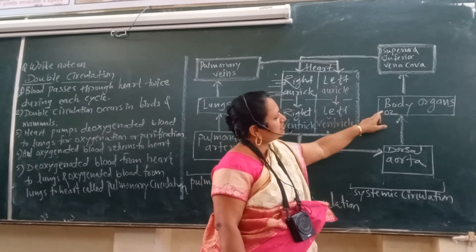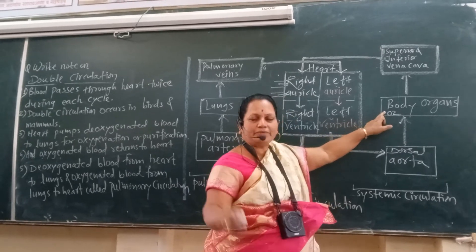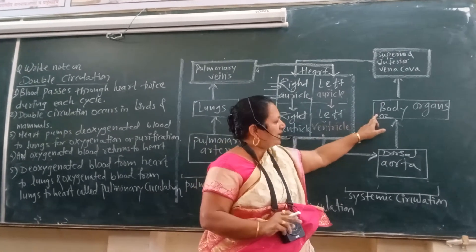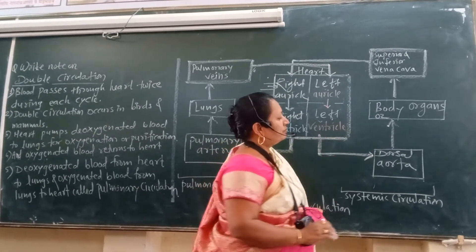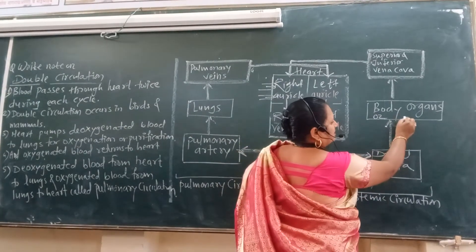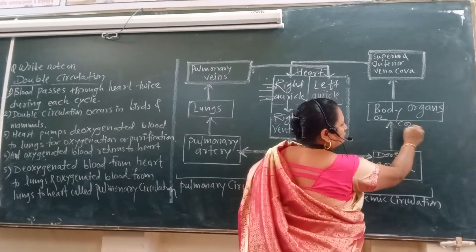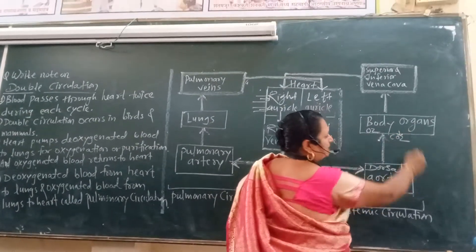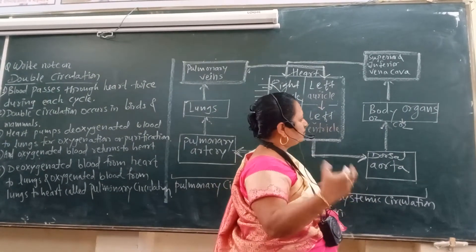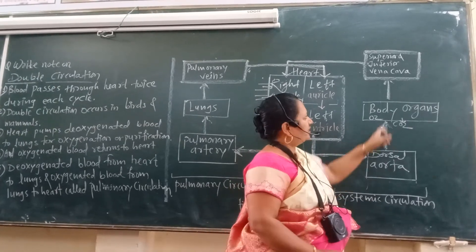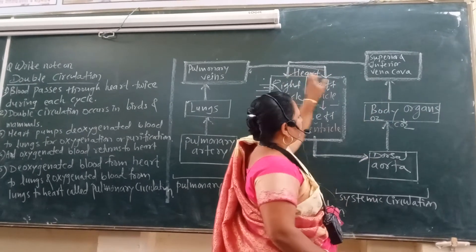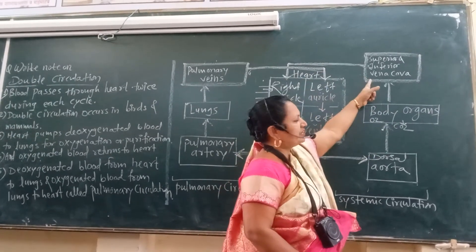Each cell gets oxygenated blood, and from it each cell produces energy. In that metabolic process, CO₂ is produced as a byproduct. That CO₂, along with the blood, is carried back to the heart.